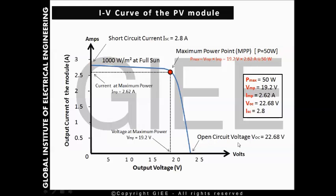This curve corresponds to a solar irradiance of 1000 watts per square meter, full sun. If you use a different irradiance, for example 500 watts per square meter, the current will be less and the voltage will be around the open circuit voltage value. This point here is the open circuit voltage — where the current is 0 — which is 22.68 volts. This point is the short circuit current, which is 2.8 amps, where the voltage is 0.